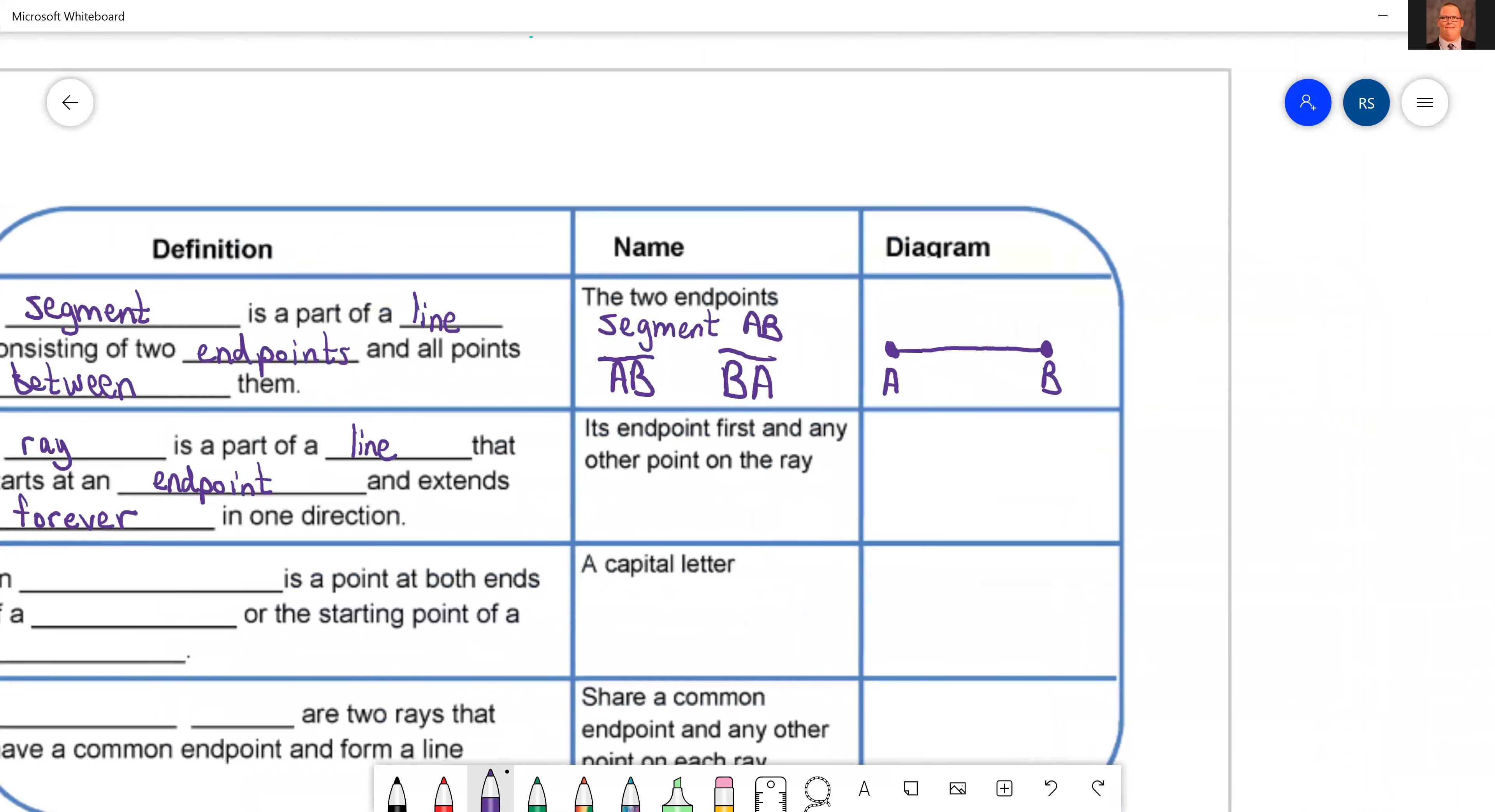But then it extends forever in one direction. So I'm going to draw two figures over here. And I call this C or that one D. But then I'm also going to draw another one going this way. That one D and that one C. You may be wondering, why is he using the same points? Both of those, even though they're going in opposite directions, we still say that it is ray.